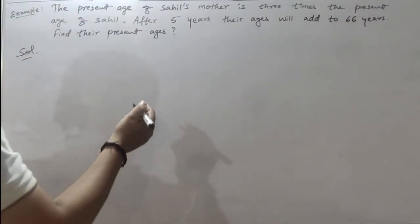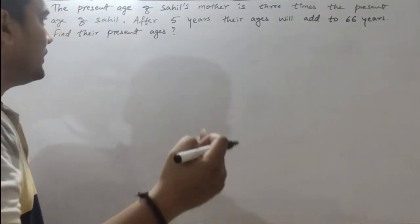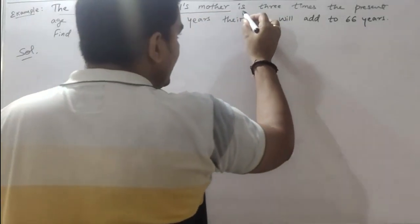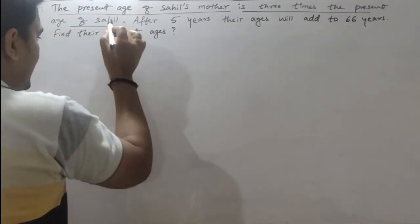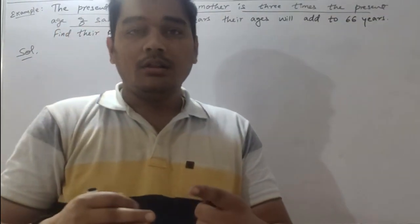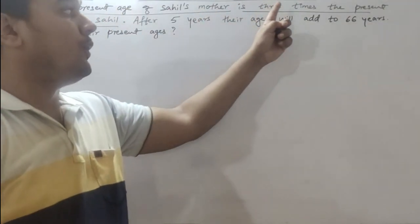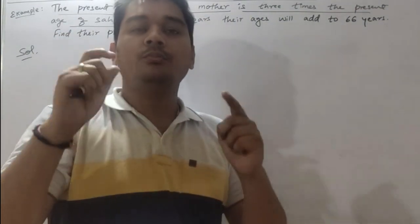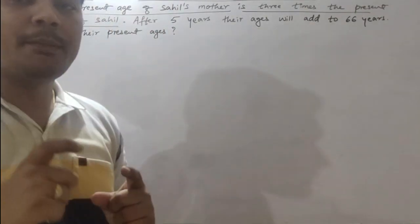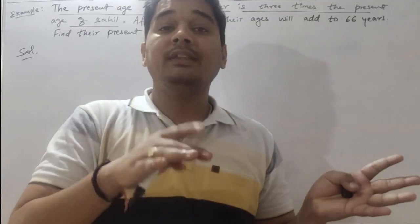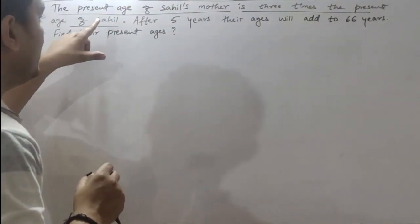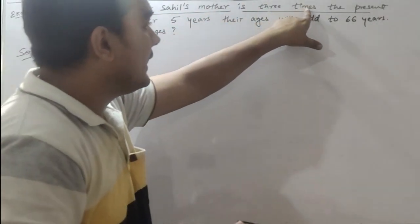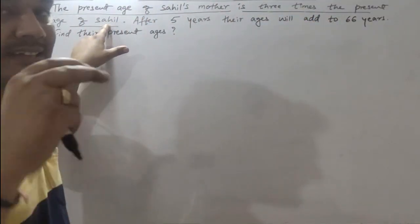First, read what the question is. The question is: the present age of Sahil's mother is three times the present age of Sahil. So the present age of Sahil's mother is three times the present age of Sahil — here the age is being compared with Sahil's present age.